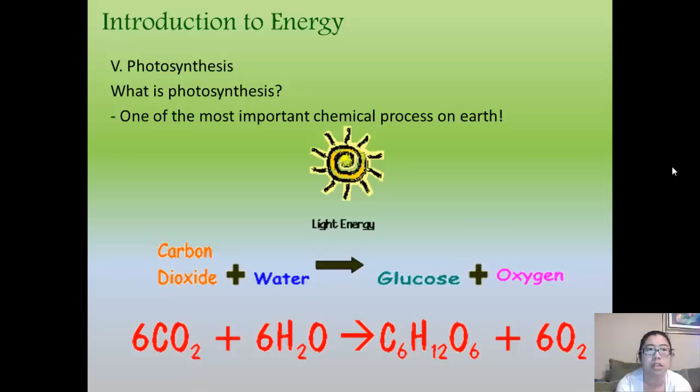In a chemical reaction, it takes about six molecules of carbon dioxide, six molecules of water. When going through photosynthesis, you have one molecule of glucose and six diatomic molecules of oxygen.